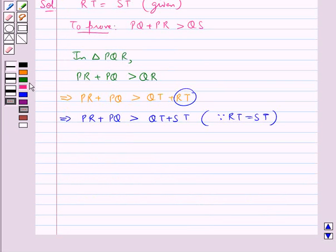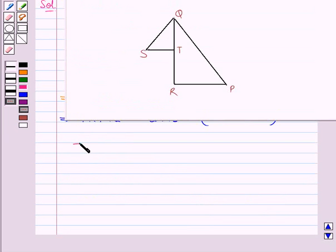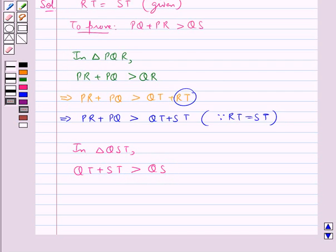Then, next we have triangle QST. In this, we consider the sum of the two sides QT and ST. So, QT plus ST and this would be greater than the third side which is QS. Now, we have got QT plus ST is greater than QS.